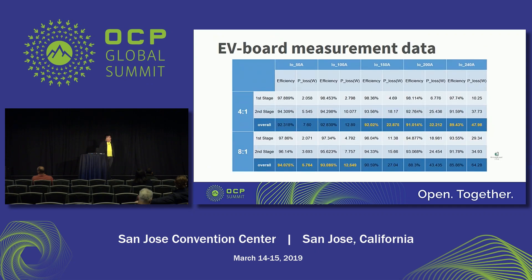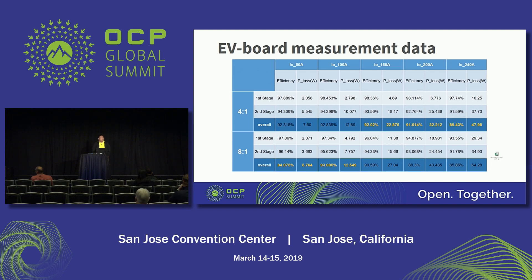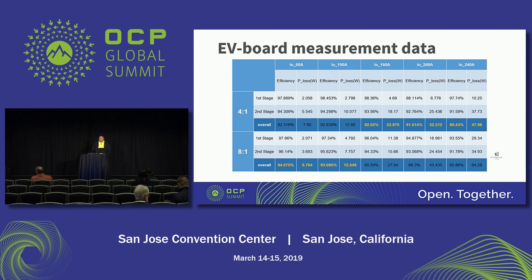This is measurement data from our EV board — two-stage combined efficiency. At 50-amp load, 8-to-1 conversion ratio power losses are about 2 watts less than 4-to-1 conversion ratio. As load increases to 100 amps, there's not much difference between 4-to-1 and 8-to-1. At 150 amps, efficiency is better with 4-to-1 conversion ratio. And at 200-amp output, 4-to-1 power losses are 11 watts less than 8-to-1 conversion ratio.